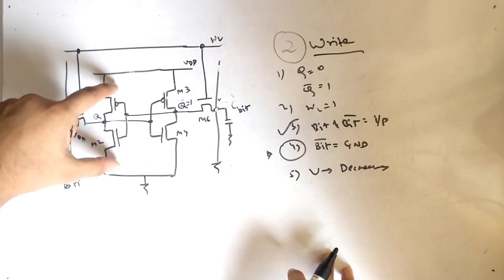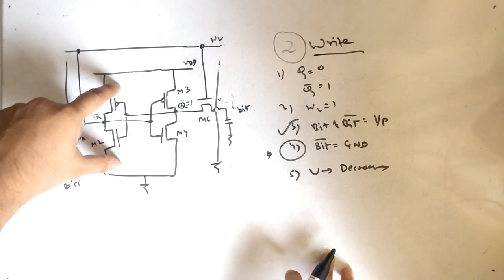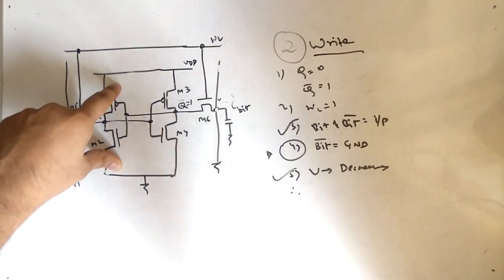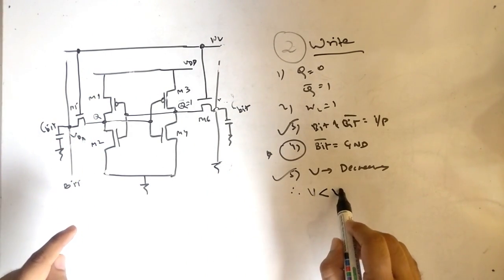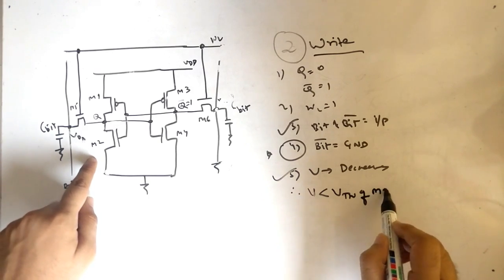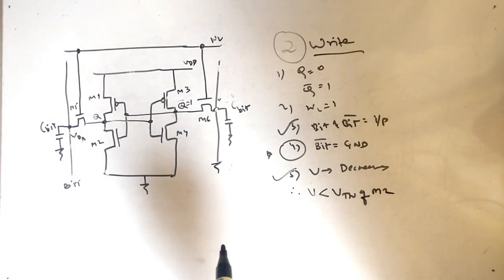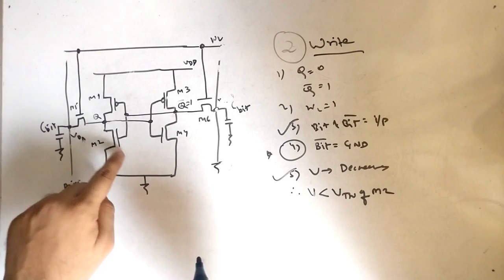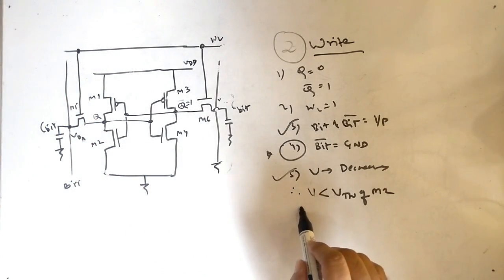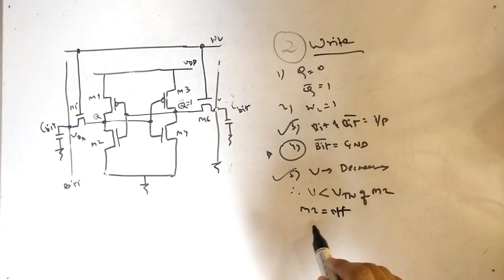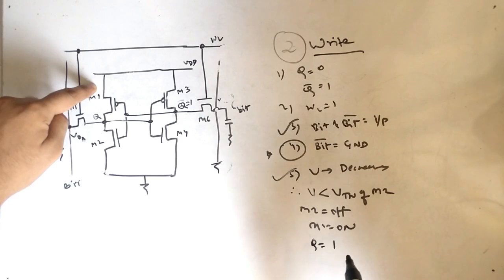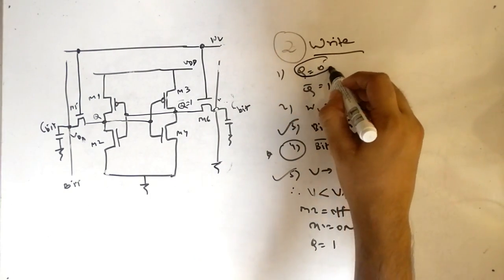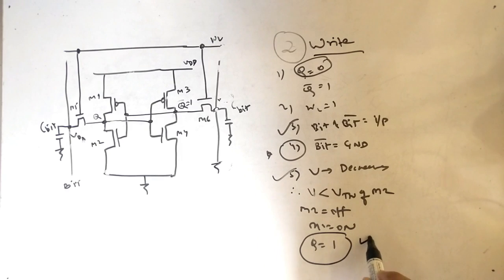The fifth point is that voltage decreases, and when voltage is decreasing, two transistors are affected. This is the tricky part: if the voltage is less than the threshold voltage of M2, then M2 would be off. If M2 is off, then M1 would be on. When M1 is on, the output is 1, so Q, which was 0, has now become 1 — we have written successfully into the memory.